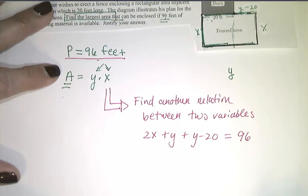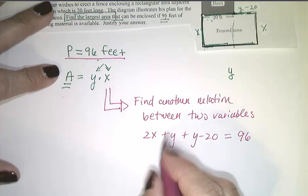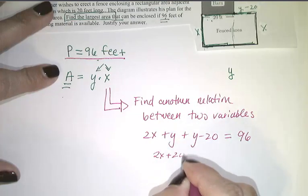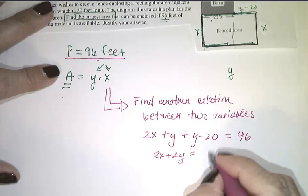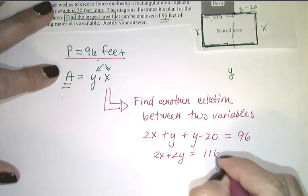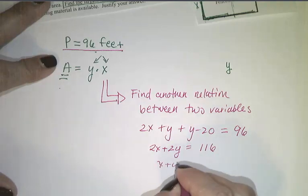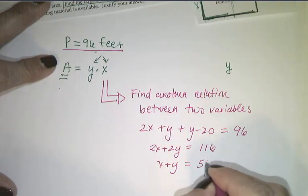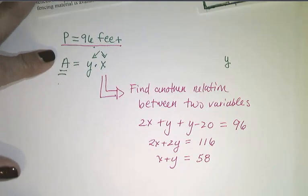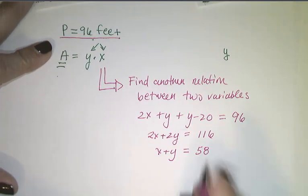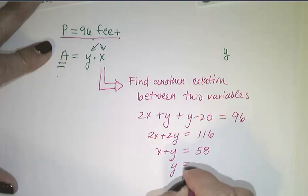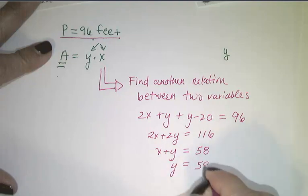That is good news. Now, if I combine like terms, I get 2x plus 2y, and I move my 20 over to the right, I get 116. And then if I divide both sides by 2, I get x plus y equals 58. And that's nice. So if I solve for y so that everything is in terms of x, I get y equals 58 minus x.